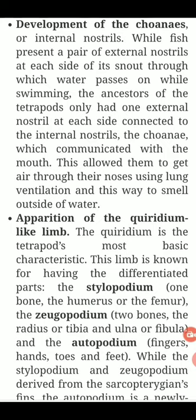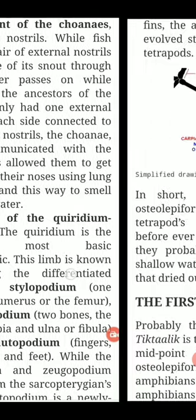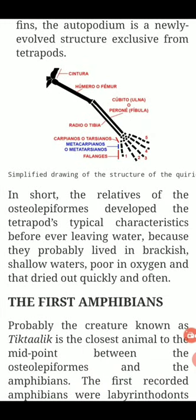The chiridium limb is the tetrapod's most basic characteristic. This limb is known for having differentiated parts: the stylopodium — one bone, the humerus or the femur; the zeugopodium — two bones, the radius or tibia, and the ulna or fibula; and the autopodium — fingers, hands, toes, and feet. While the stylopodium and zeugopodium derived from the Sarcopterygian fin, the autopodium is a newly evolved structure exclusive to the tetrapods.